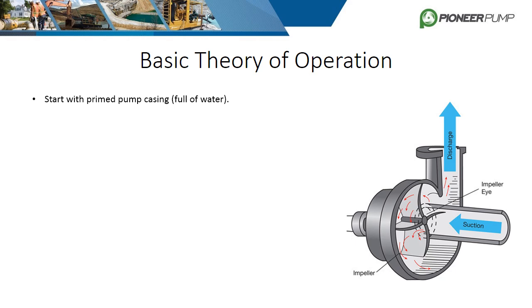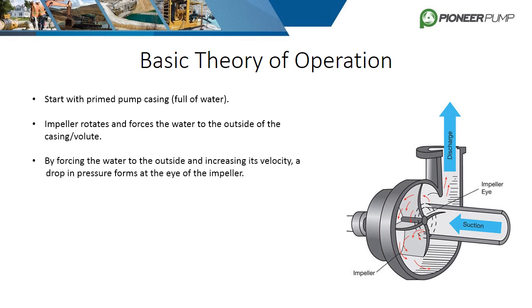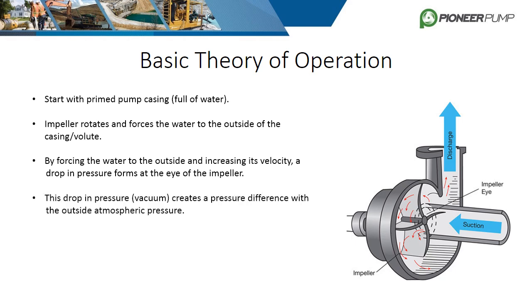To explain how the pump works, let's start with a volute or pump casing full of water — this would mean the pump is primed. As the engine or motor rotates the impeller, it forces the water to the outside of the casing or volute. As the water is forced to the outside, its velocity increases and the water at the center or eye of the impeller sees a drop in pressure. This drop in pressure creates what is referred to as a pressure differential between the water inside the pump case and the outside atmospheric pressure. The difference in pressure enables the atmospheric pressure to push water into the eye of the pump.